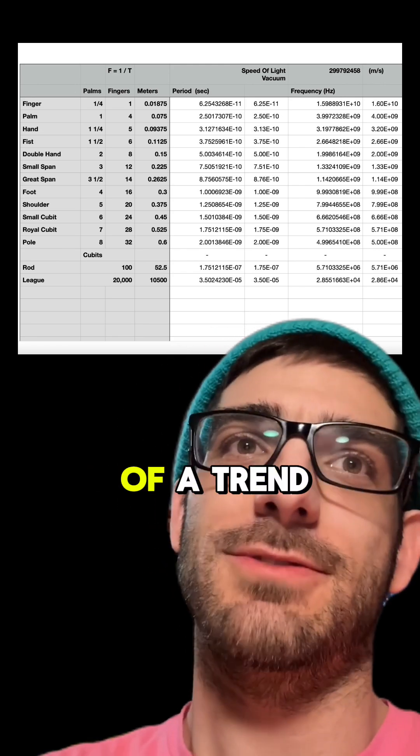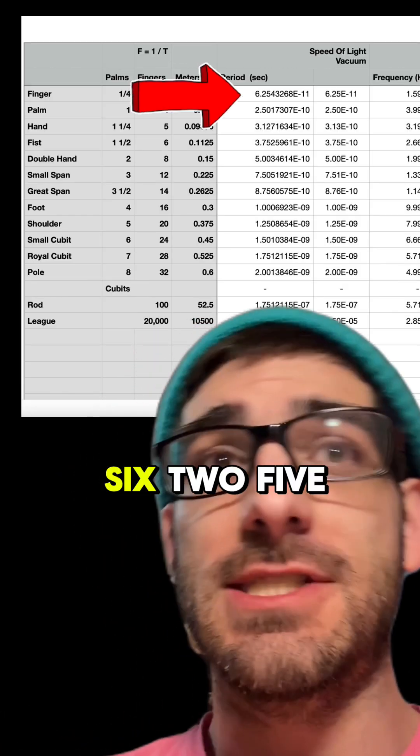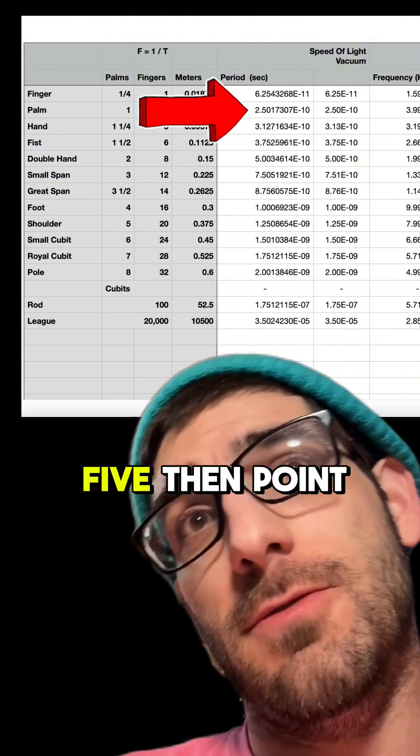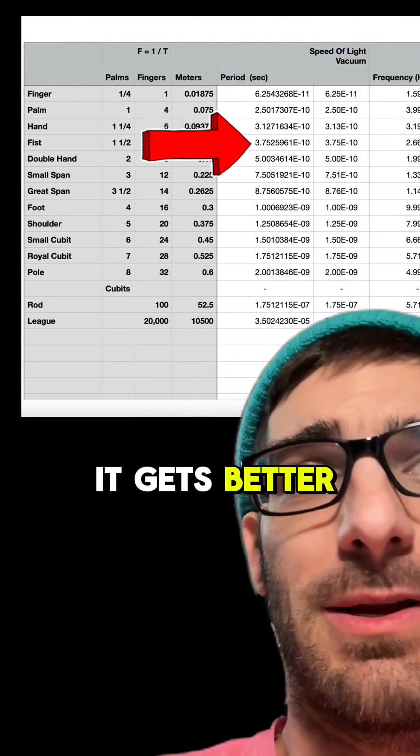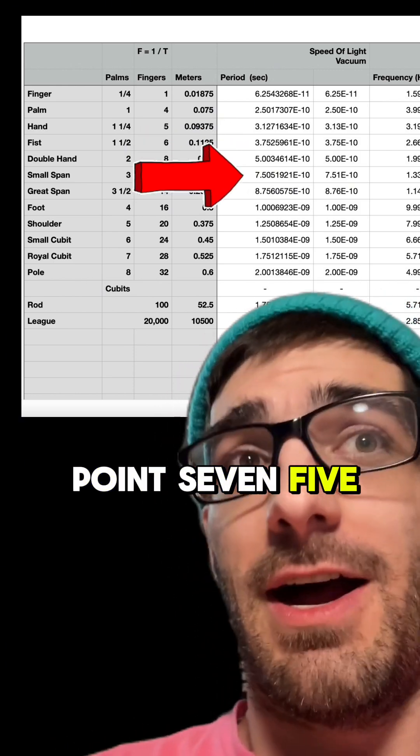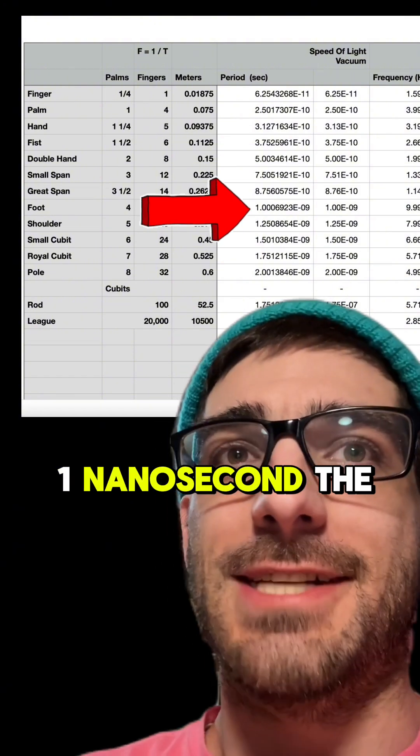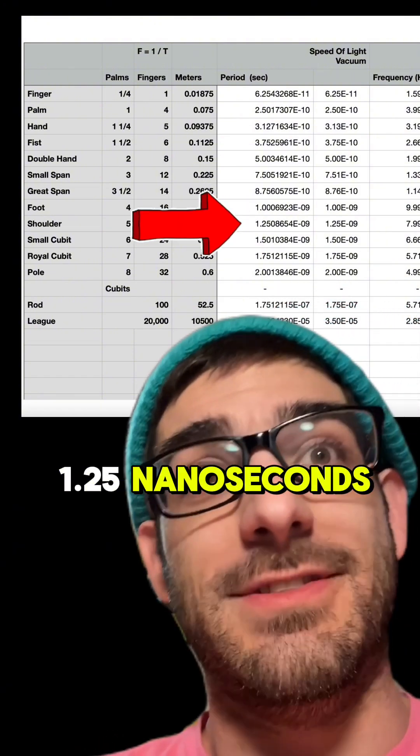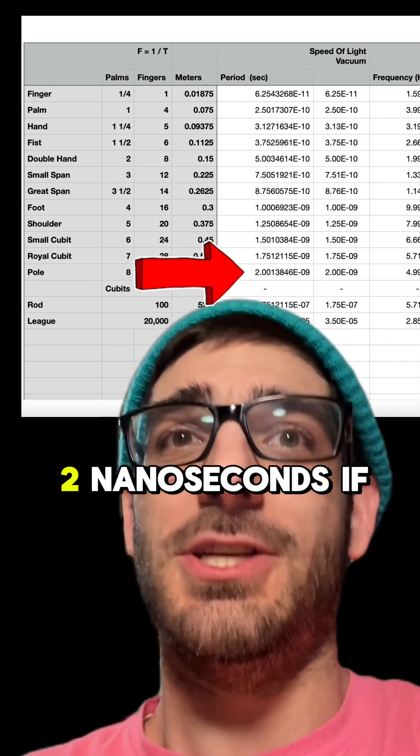Now, look at this. It doesn't seem like there's much of a trend here. But if you look at all these periods, I'm going to go through: 0.0625, then 0.25, then 0.3127. And this is where it gets better. 0.375, then 0.5, then 0.75, then 0.875. Then you've got 1 nanosecond. Then 1.25 nanoseconds, 1.5 nanoseconds, 1.75 nanoseconds, and 2 nanoseconds.